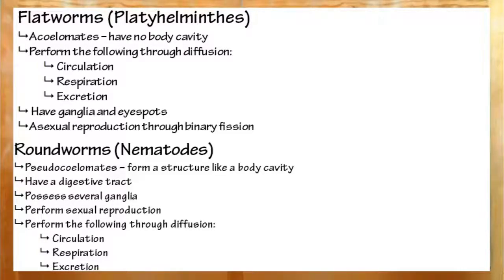Flatworms will have several ganglia, clusters of nerves, and eye spots. Sometimes they'll only have one ganglia, though. A lot of these are hermaphroditic, and also they can perform asexual reproduction through binary fission.